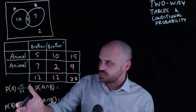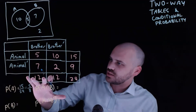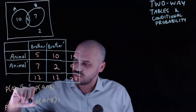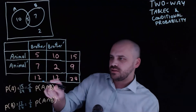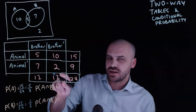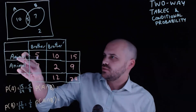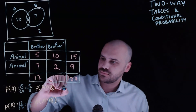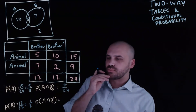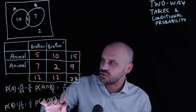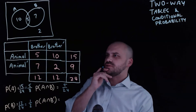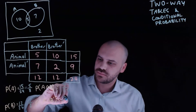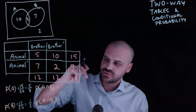The probability that someone has a brother in their house: the total number of people with a brother is 12, so 12 out of 24, which equals one half. The probability of A and B — an animal and a brother — those people are five out of the total of 24. And the probability that someone has an animal and no brother: that's 10 out of 24, which is 5 out of 12.